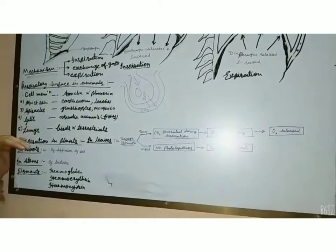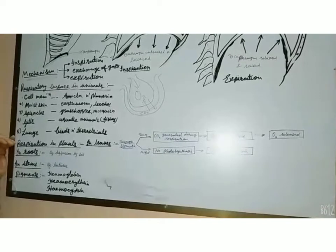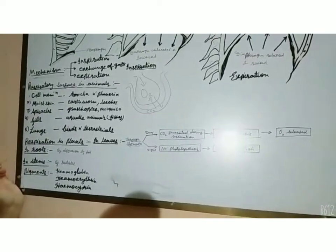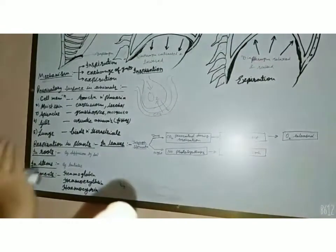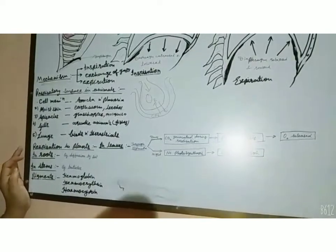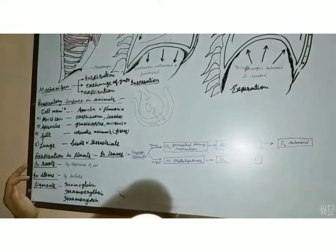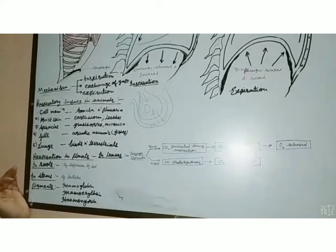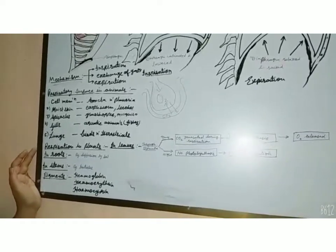All surfaces used for respiration share some specific characteristics. The respiratory surface should be thin-walled — whether it is the cell membrane or gills. It should be highly vascularized, meaning richly supplied with blood capillaries so that exchange of gases may take place easily. The surface of gaseous exchange must also be moist to speed up diffusion. Third, it should be large in area and richly supplied with blood.